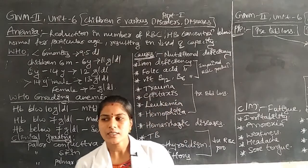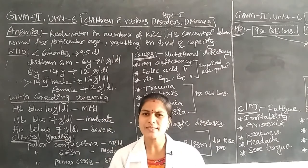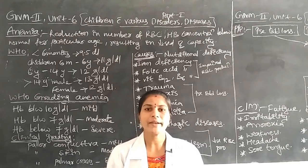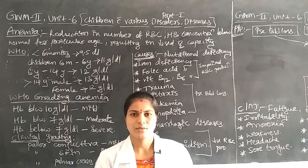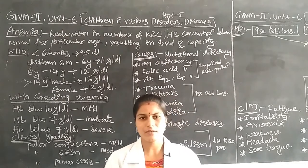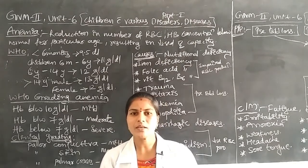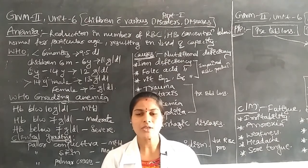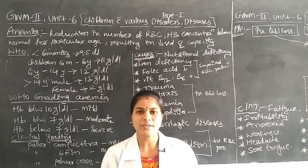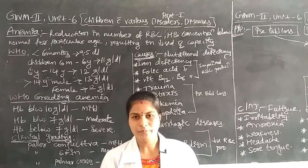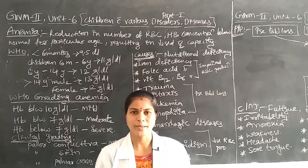Next, there is hemoglobin. Hemoglobin is a type of red color protein present in the RBCs. The function of hemoglobin is transportation, exchange of gases, and providing ATP energy to particular body parts. These are the normal functions of RBC and hemoglobin.